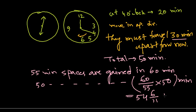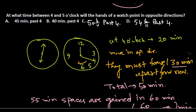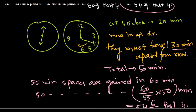That's going to be the answer: 54 and 6/11 past 4. Option D is the correct answer for this question.